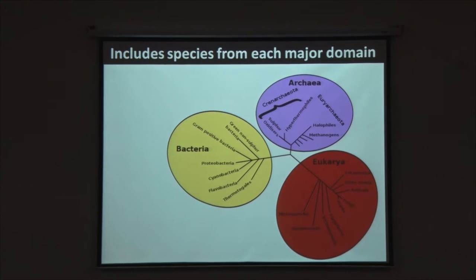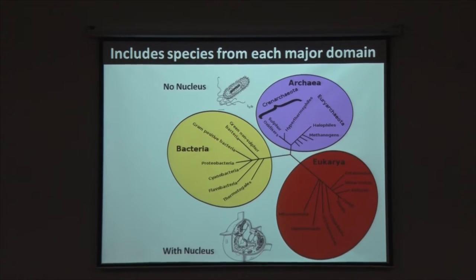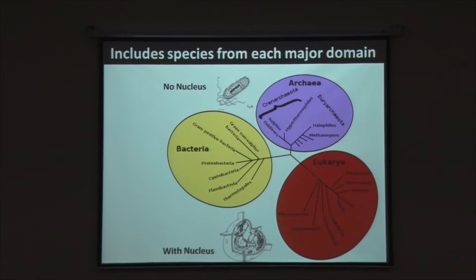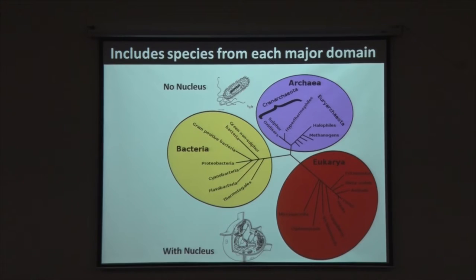The microbiome includes species from each of the major domains: archaea, which form a well-knit phylogenetic group; bacteria; and eukaryotes. Bacteria and archaea are characterized by not having a nucleus, whereas eukaryotes do. Many of these microorganisms cannot be cultured outside of the body — they are called unculturable. So even though we had a rough idea of the nature of the microbiome through culture media and culturing procedures, we did not have complete knowledge of what these microorganisms are in our body.